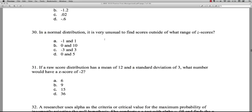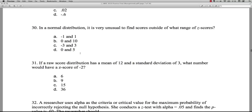What you have is that in the normal distribution, it is very unusual. It happens less than one percent of the time to find scores that have an absolute value greater than three. So below minus three or above positive three. So 30 is c.